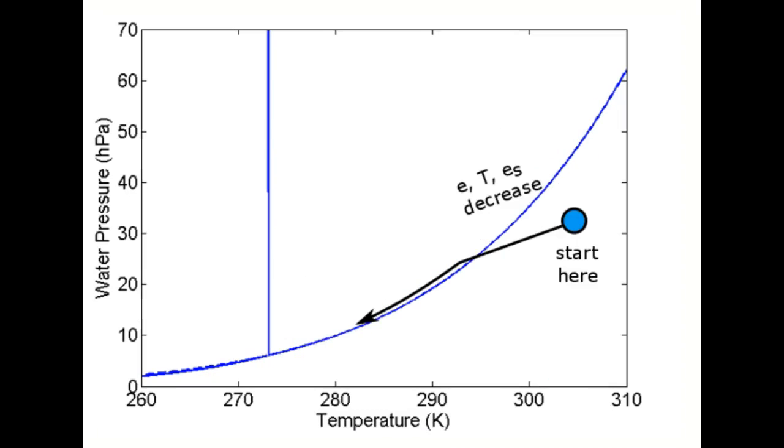The third process is adiabatic ascent. As an air parcel ascends, its pressure and temperature drop. Because the water vapor mixing ratio is constant until a cloud forms, the drop in pressure means a drop in the water vapor pressure.